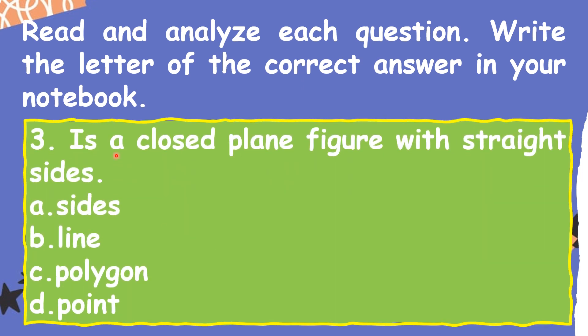Number three: a closed plane figure with straight sides. A. Sides, B. Line, C. Polygon, D. Point. What is your answer? It's polygon. Very good.